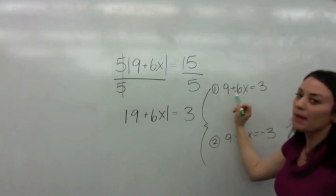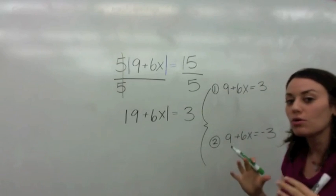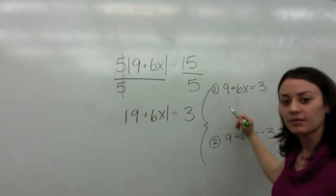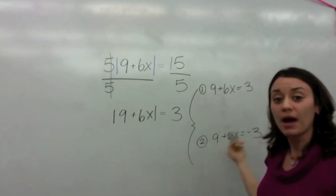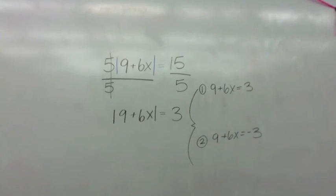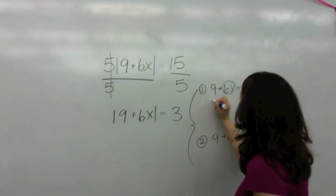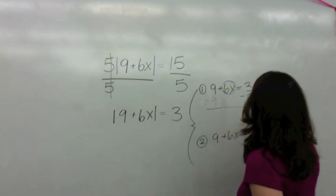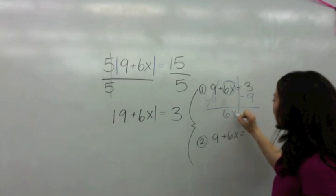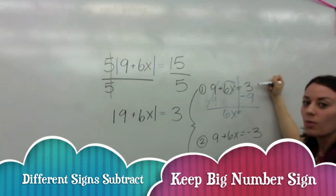And please remember that when you see a number that is by itself and it has no sign like the number nine. Is this a positive nine or a negative nine? Okay, it's a positive nine. So when we solve, we circle six X, we circle six X, and now we're going to subtract nine from both sides. Okay, make our T-bone. Nine, take away nine is zero. Bring down the six X and six X equals positive three minus nine.